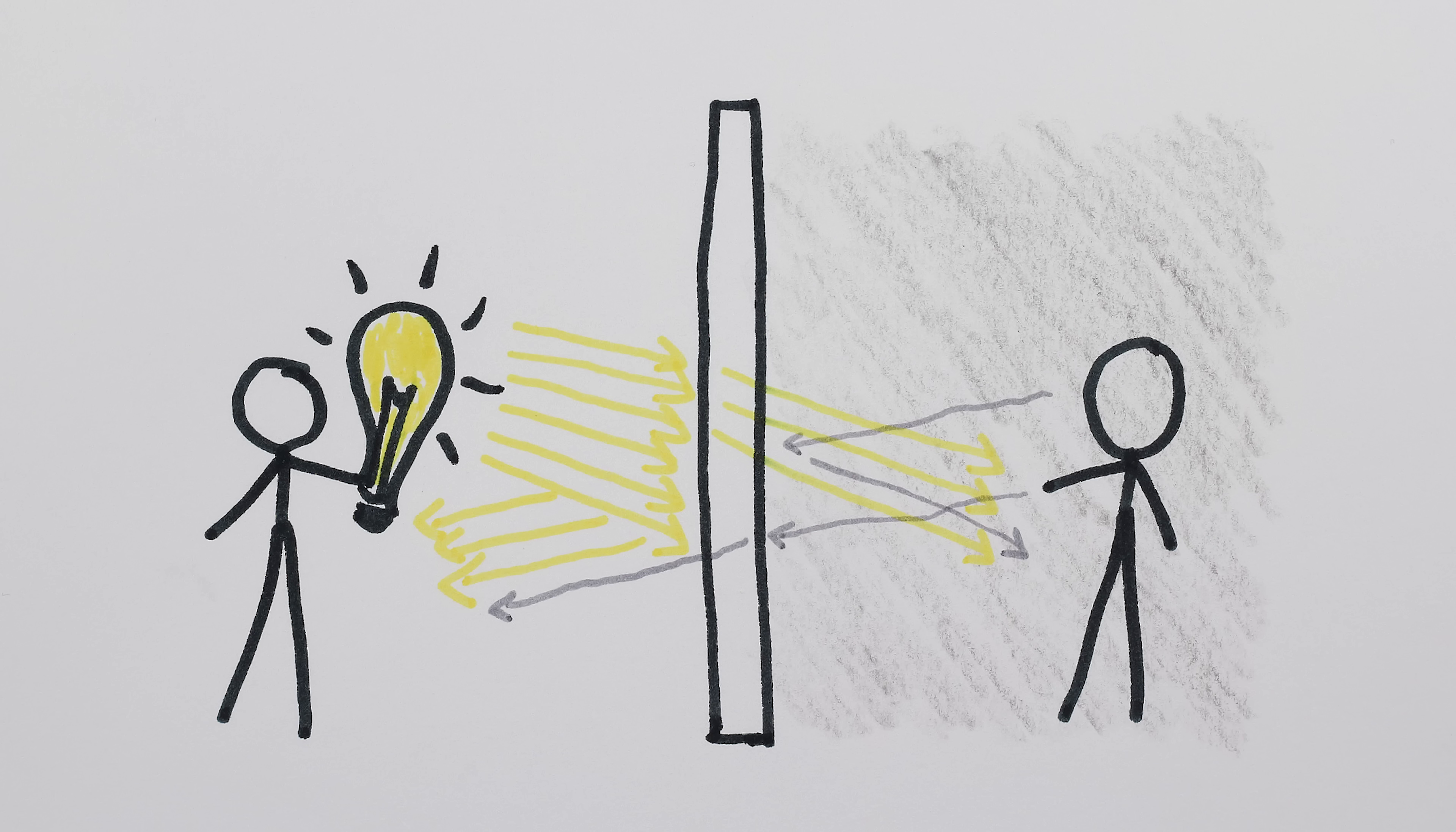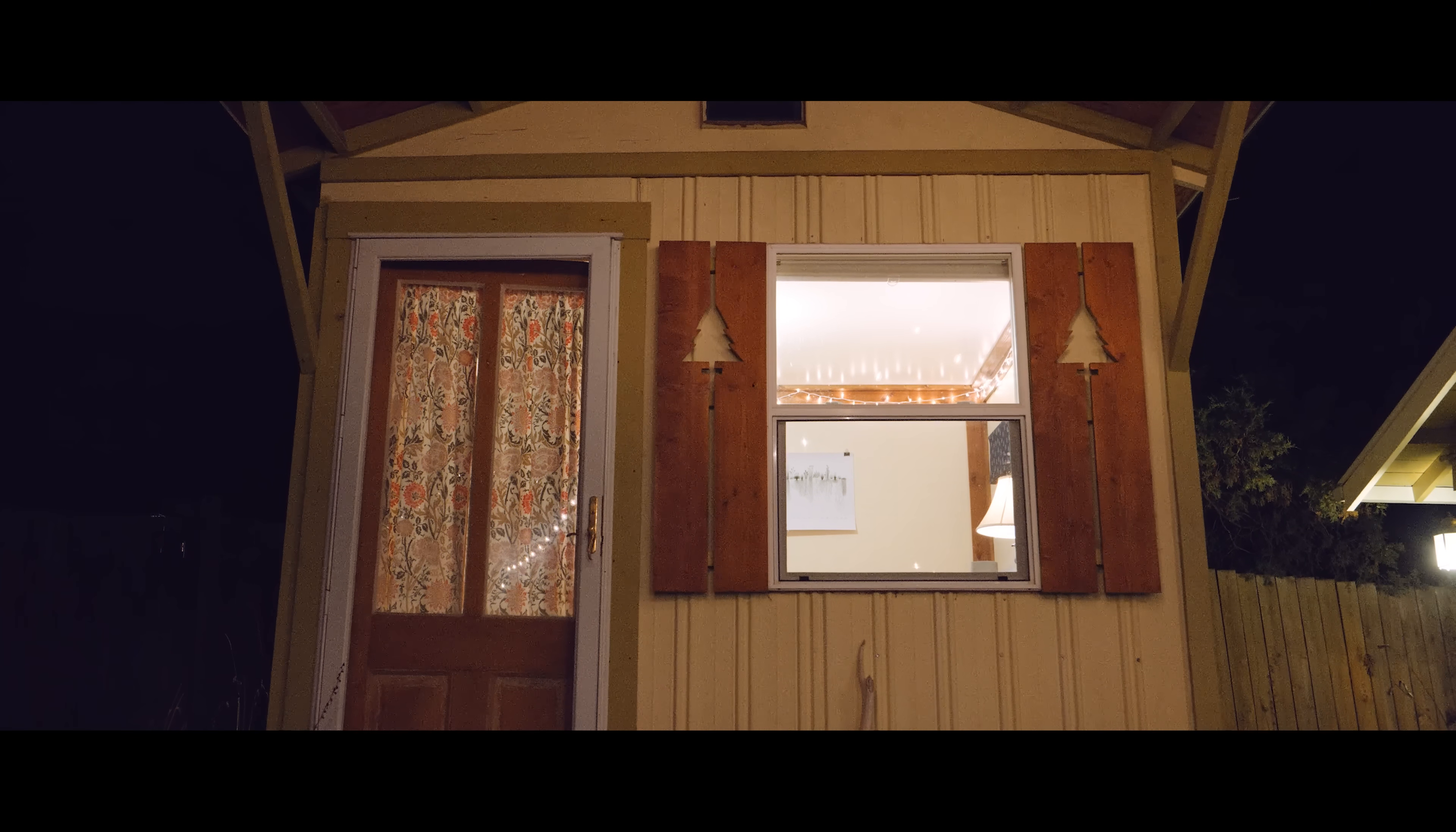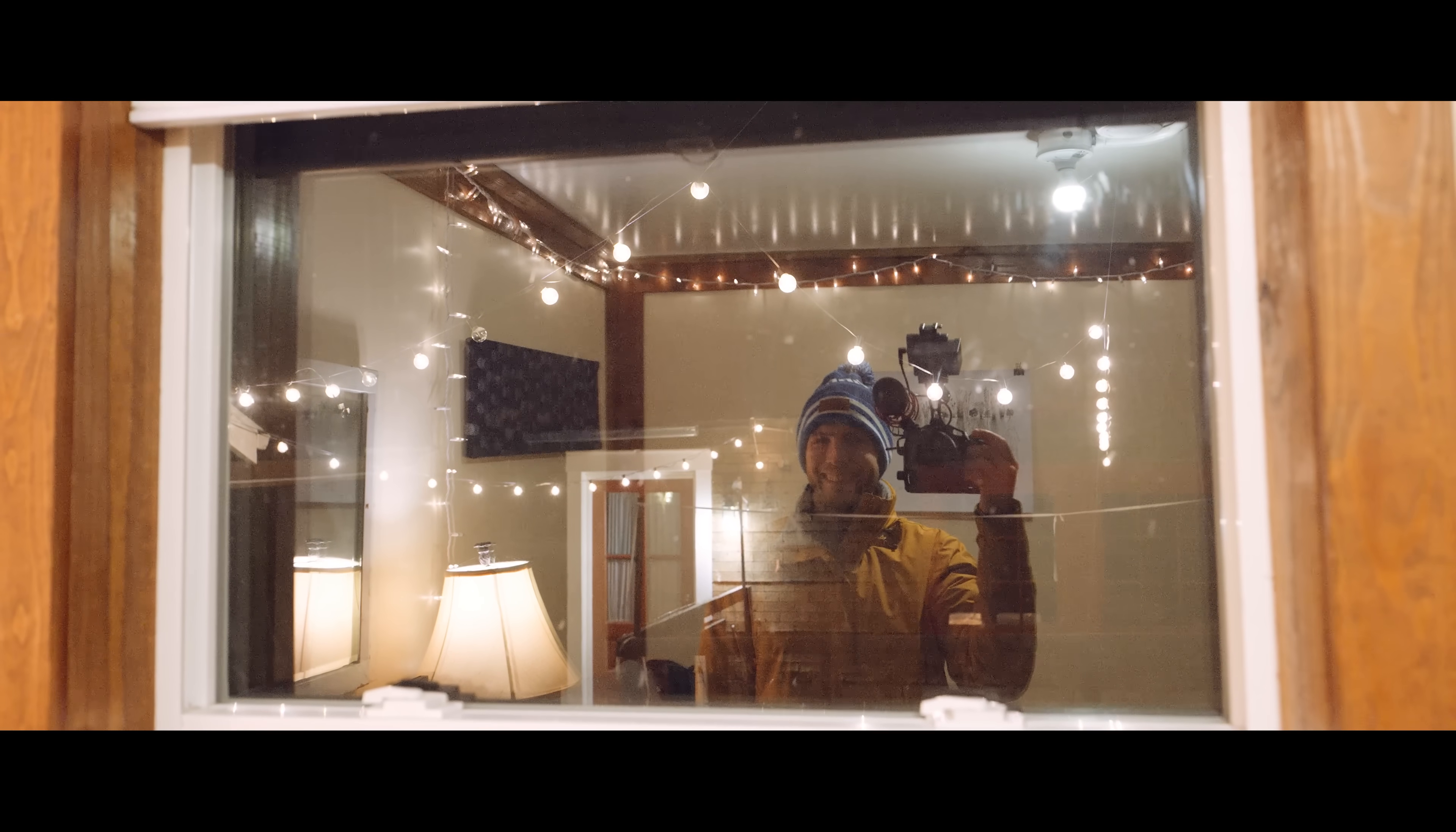This is how a one-way mirror glass works, for example, or why it's really easy to see into a house at night, but hard to see out. Relative brightness.